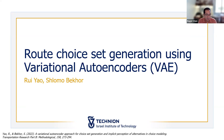He conducts research in transportation planning and network equilibrium models and has a special interest in route choice modeling. Today he's talking about the variational autoencoder approach to route choice set generation, which is a very common problem for people who do route choice modeling with discrete choice approaches. With that, I'll turn it over to Professor Vikor.